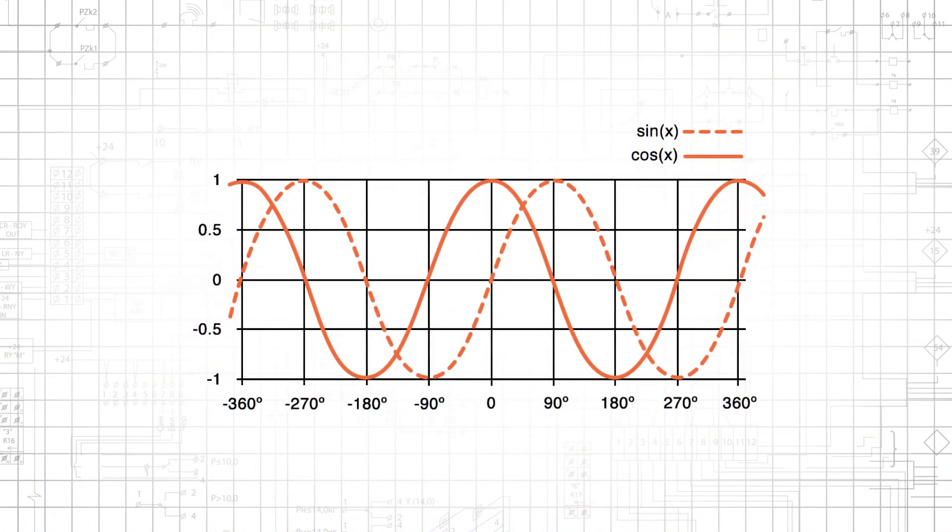We can mathematically generate a sinusoidal signal by means of the sine function or the cosine function. These functions operate on angles, and if we calculate and plot sine values from 0 to 360 degrees, we produce the sinusoid shown here.